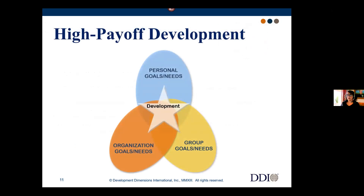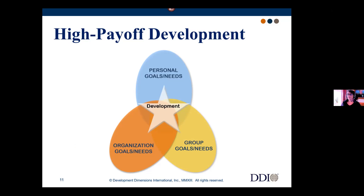One way to overcome barriers is to ensure each person's development goals are aligned with the team and the organization. When personal goals are aligned with the group, development is more likely to occur because the individual gets support and resources from their manager, there are more work-related opportunities to apply skills, and there's a greater chance of success when all parties are invested. Personal goals are the individual's short and long-term needs — what you'd put on your PEP for the coming year.